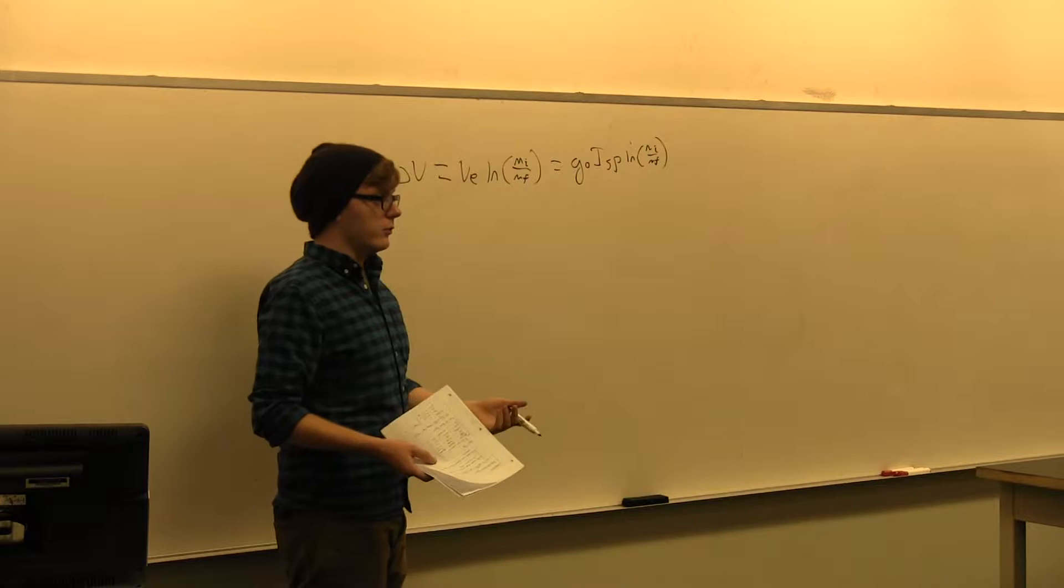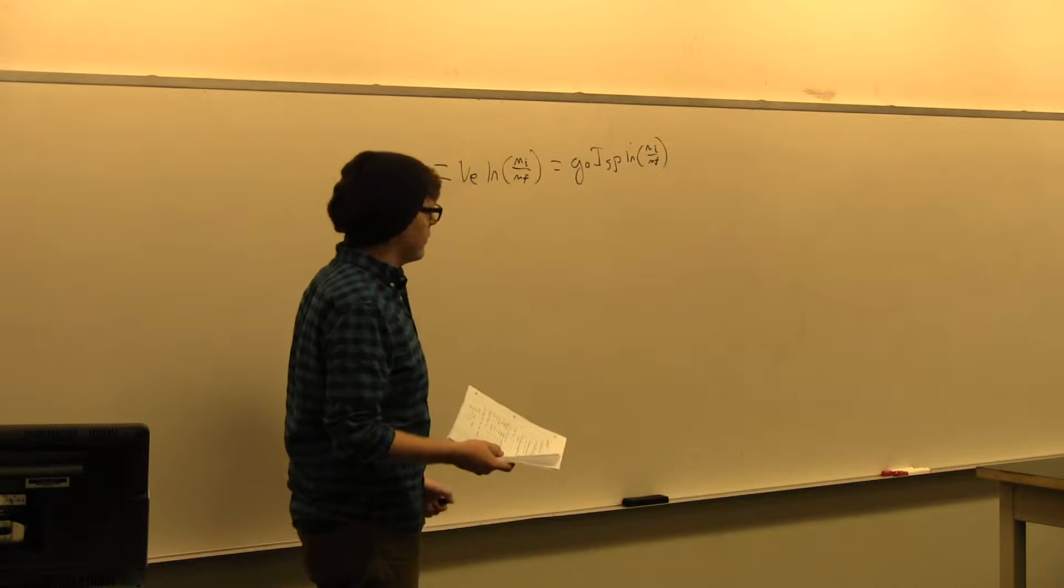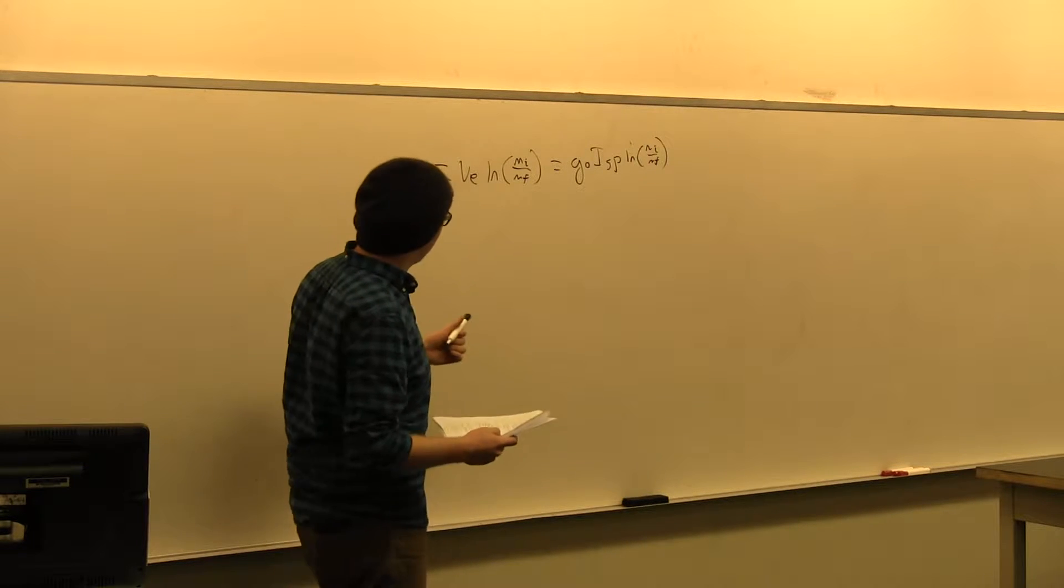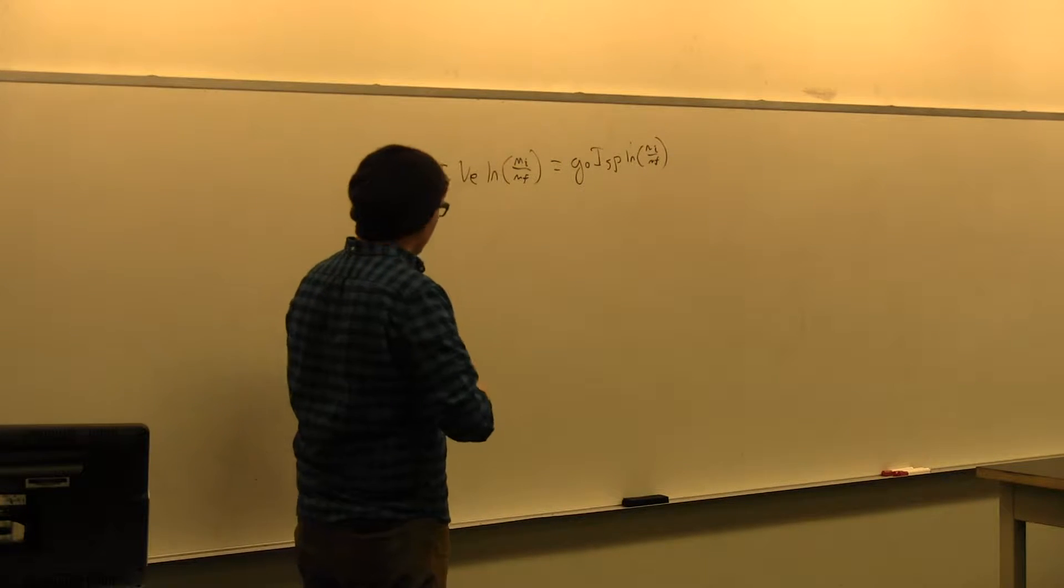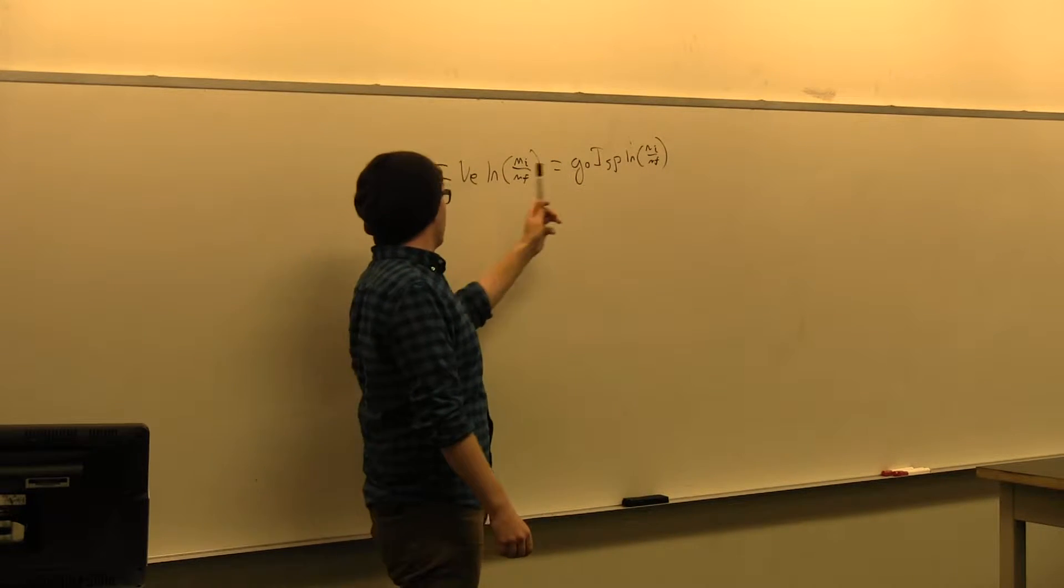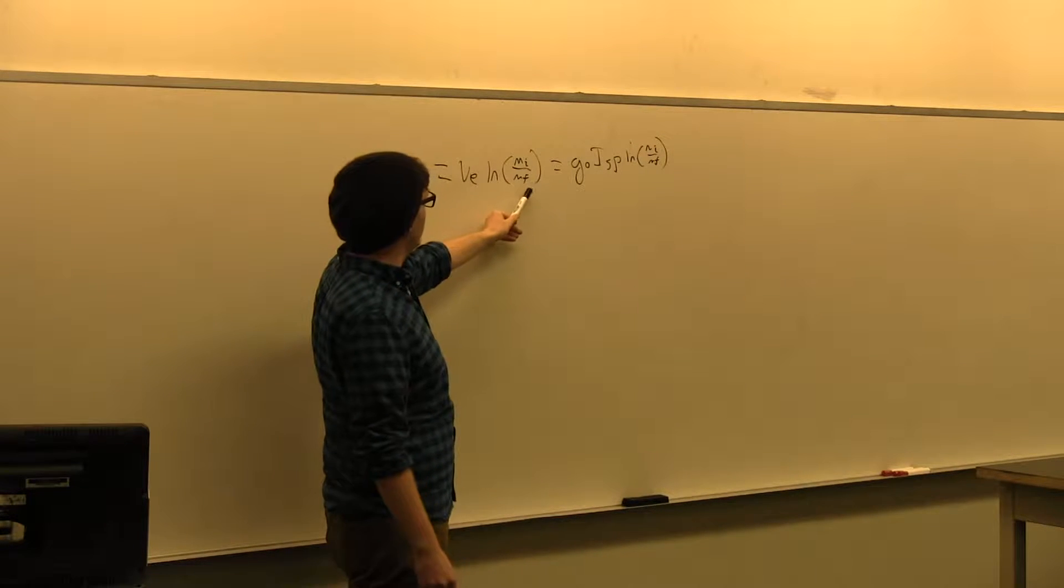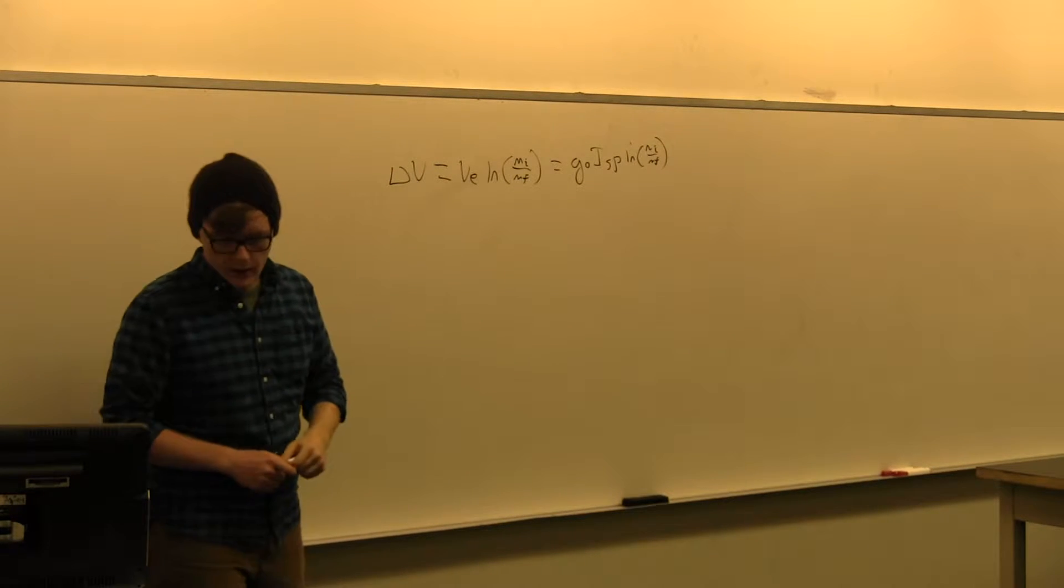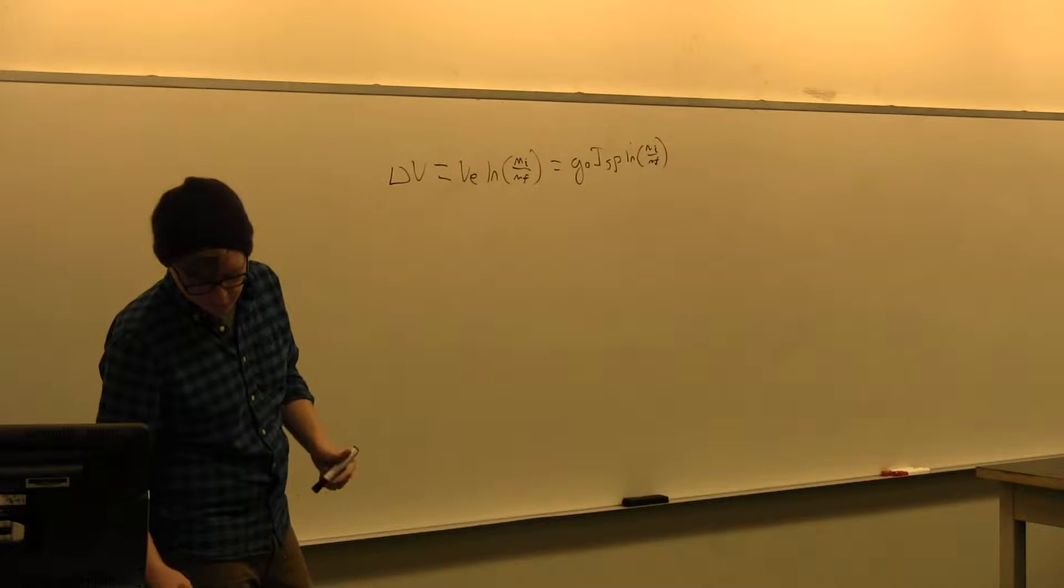So for Earth, this is just 9.8 meters per second per second. And actually for Kerbin, it is as well, because the surface gravity is tweaked so that they've got the same gravity as us. So basically what this is telling you is the higher your ISP, the better performance you can get. And also the more fuel you burn, the higher your delta V is.